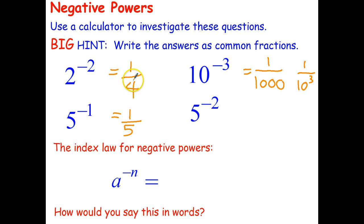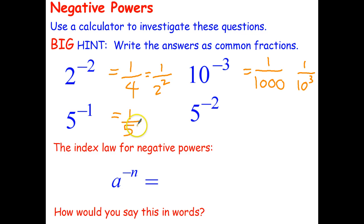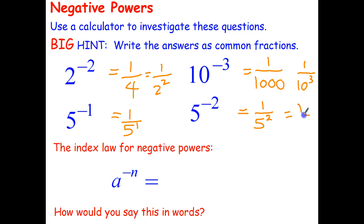Does it work for this one? Well, 4 is the same as 2 squared, so yes it does work. 2 to the negative 2 is the same as 1 over 2 to the positive 2. 5 to the negative 1 is the same as 1 over 5 to the positive 1. So for the next question, that's going to be 1 over 5 to the positive 2, which is 1 over 25.